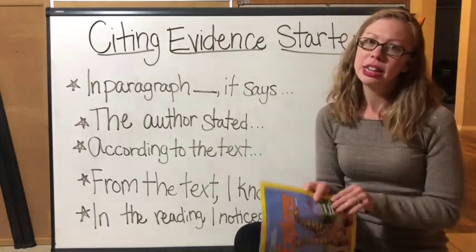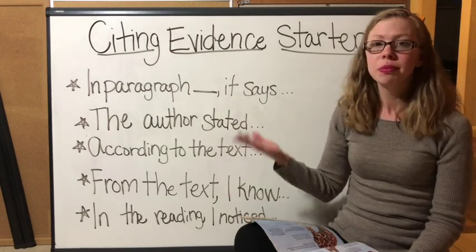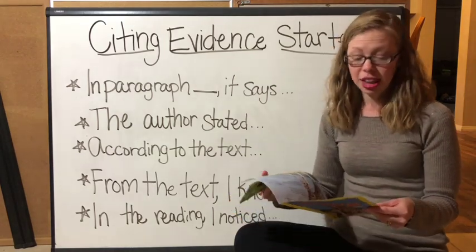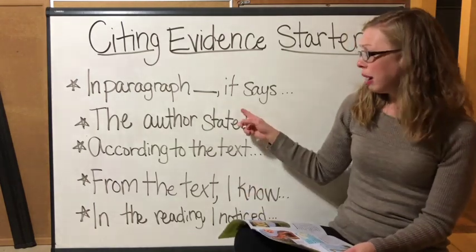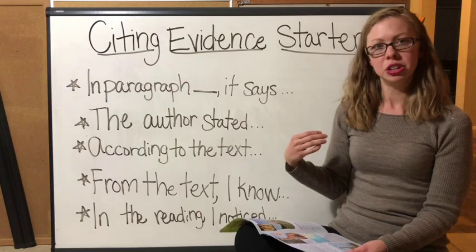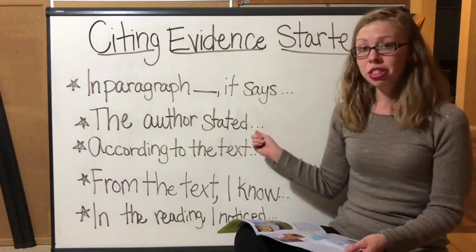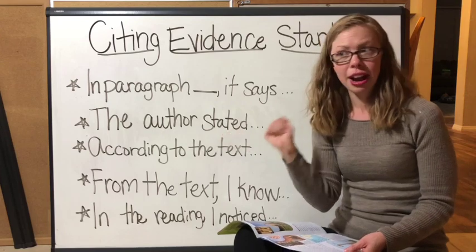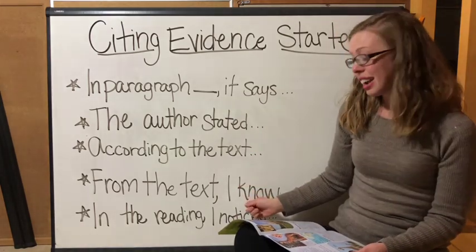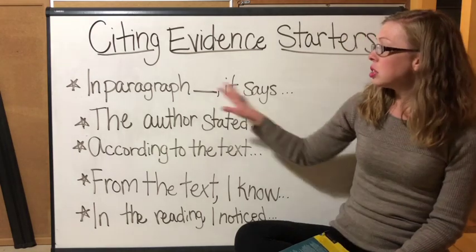So let's look at an example. I read an article in this magazine the other day about giraffes, and if I were to teach someone else about it, I would want to use some of my evidence sentence starters to tell them about it the right way. This author went to a lot of work to write this, and I want to make sure that they get credit for the information they generated. So I might say: "In paragraph one, it says that scientists didn't know there were more than one type of giraffe." As I kept reading, I could use more sentence starters: "The author stated there are actually four different kinds of giraffes." "According to the text, two of these four kinds of giraffes are endangered." "From the text, I know that there are some things I can do to help support endangered animal populations."